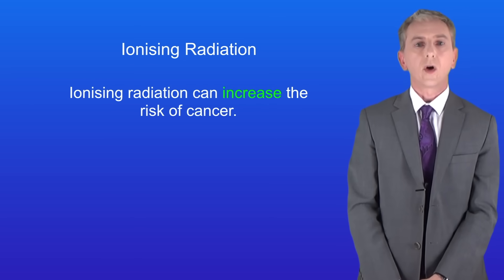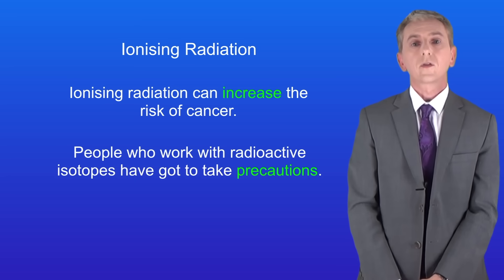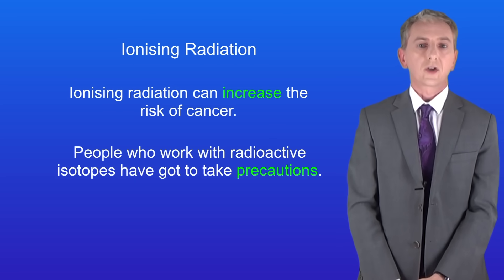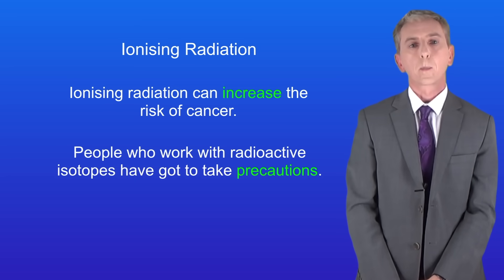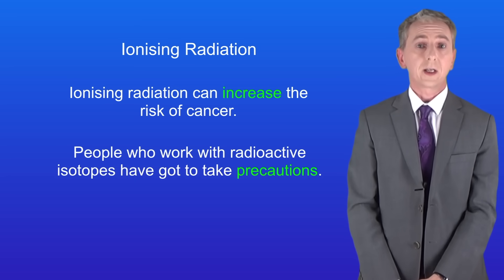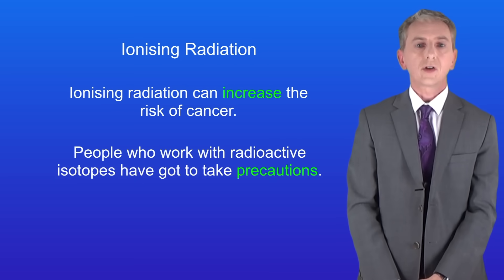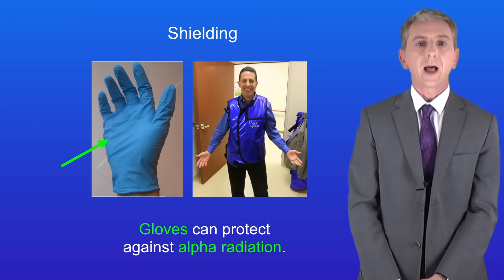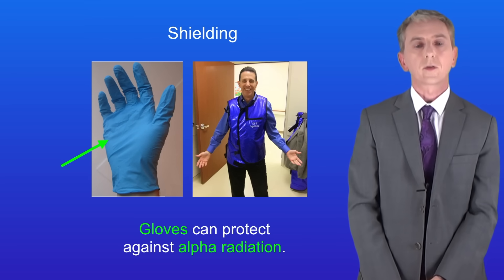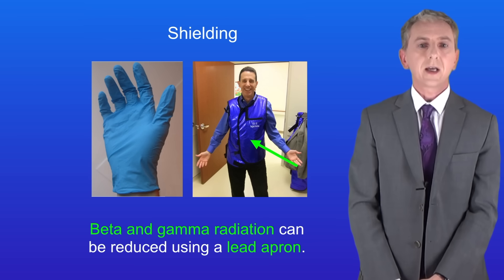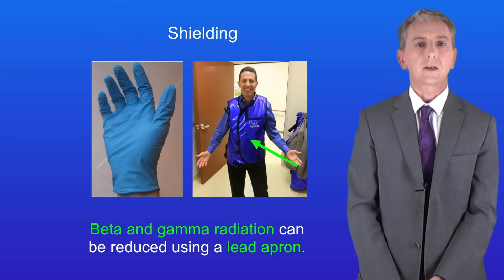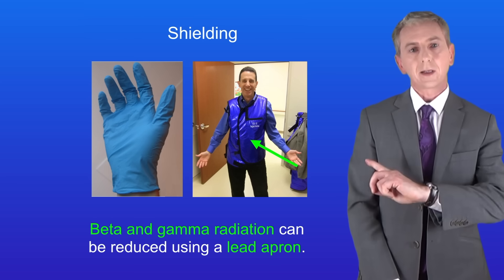Now as I said before, ionizing radiation can increase the risk of cancer, so people who work with radioactive isotopes have got to take precautions. The first precaution is shielding to stop the radiation. We saw in an earlier video that different types of radiation have different penetrating powers. Alpha radiation, which has a very low penetrating power, can be stopped by wearing gloves. However beta and gamma radiation are more penetrating — for these we can use lead, for example in this lead apron.